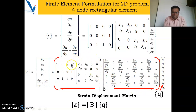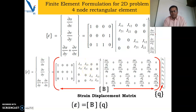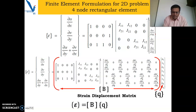In this session, the important thing is the Jacobian matrix. We will see how to obtain this Jacobian matrix, and once we find it, it is possible to relate the xy coordinate system with the ζη local coordinate system.